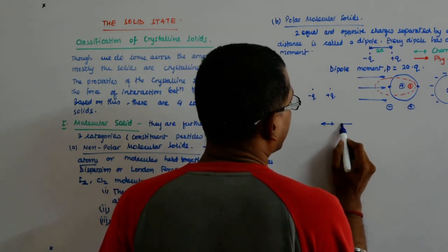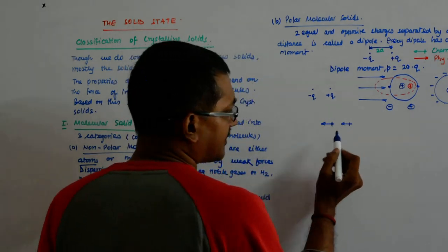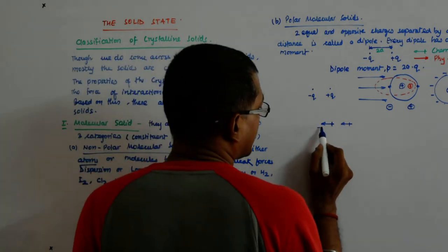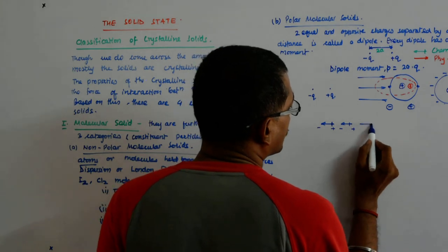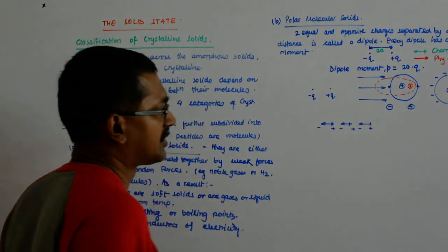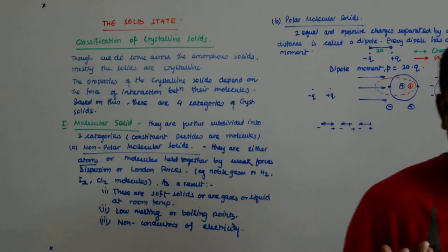It produces a field and then polarizes something else. This is a positive end and this is a negative end. You see that this is a negative end, this is a positive end. This is a negative end, this is a positive end.